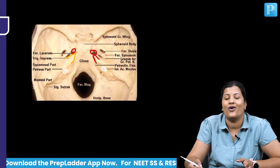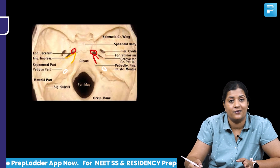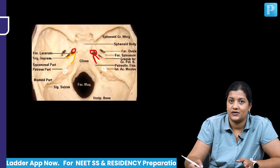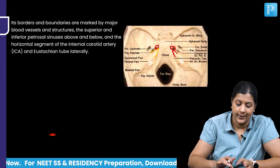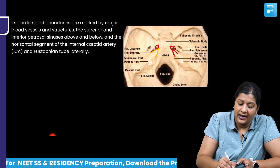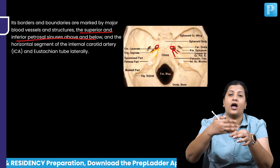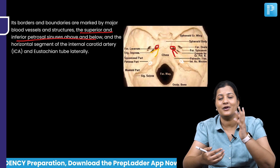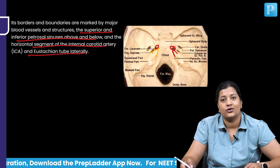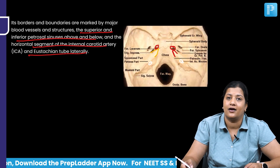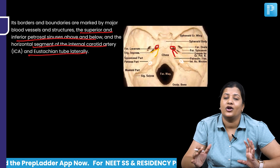The petrous apex is related to the horizontal part of the internal carotid artery and to the Eustachian tube. The Eustachian tube is present in the anterior wall of the middle ear and is in close relation to the base of skull, with the petrous apex related laterally to it. Superiorly and inferiorly, the petrous bone is bounded by the superior and inferior petrosal sinuses.